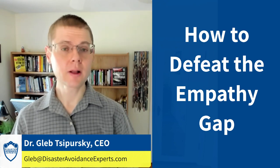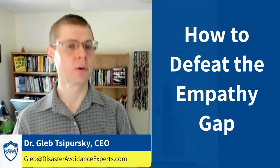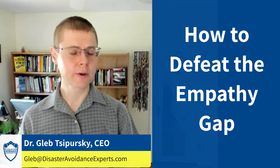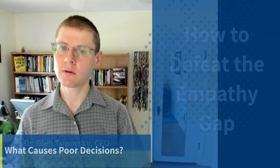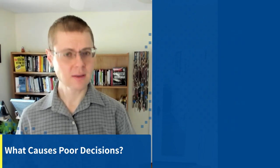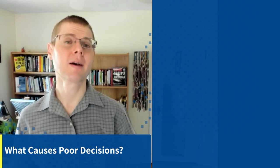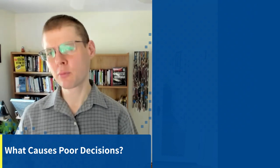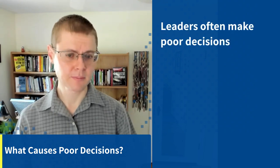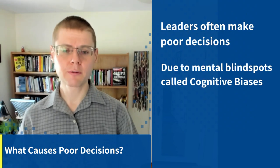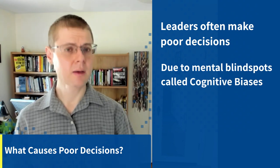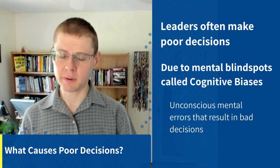Today we'll help you make the wisest and most profitable decisions about emotions, specifically a gap in emotions between leaders and their followers, between executives and employees. This gap is called the empathy gap, and it leads to a lot of poor decisions in motivating and engaging with employees. Leaders often make poor decisions because of mental blind spots called cognitive biases, and the empathy gap is one of these cognitive biases.